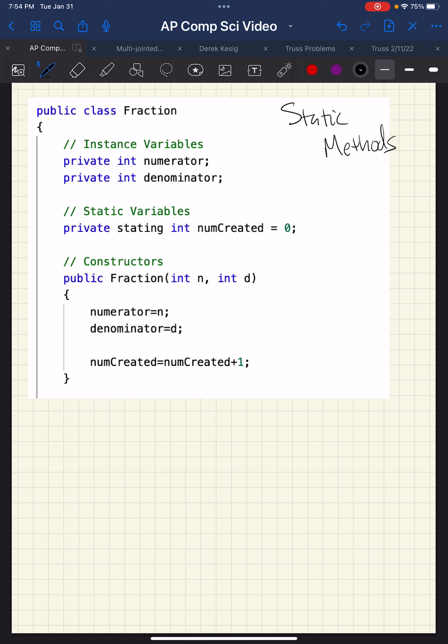A classic example of static methods are the math methods. Public static double SQRT double X in math. Right? That just returns the square root of a number.